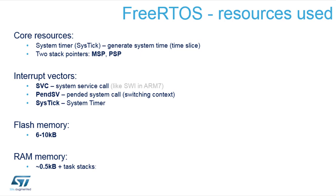FreeRTOS gets access to the stack pointers — MSP, the main stack pointer, and PSP, the program stack pointer. The MSP is used for the interrupts and the scheduler during the task switch. The PSP, program stack pointer, is used for the tasks to point to their local stacks, so when you run a task it uses its own dedicated pointer to the stack and moves with that.